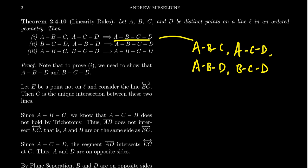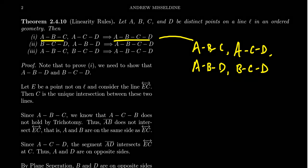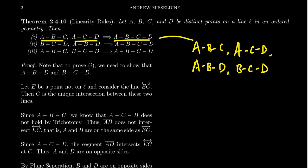So that's the importance of the linearity rules: if I have two betweenness statements, they will imply the other two. So if we know B is between A and C, and we know that C is between A and D, then we can infer that B is between A and D, and C is between B and D. That's the first linearity rule.